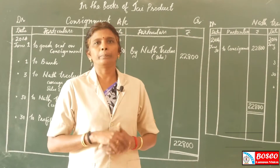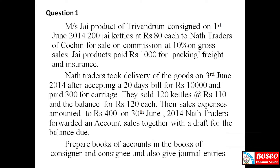Let us discuss our problem. Mrs. J. Products of Trivandrum consigned on 1st June 2014, 200 kettis at Rs. 80 each to North Traders of Cochin for sale on commission at 10% on gross sales. J. Products paid Rs. 1,000 for packing, freight and insurance. North Traders took delivery of the goods on 3rd June 2014 after accepting a 20-day bill for Rs. 10,000 and paid Rs. 300 for carriage. Then sold 120 kettis at Rs. 110.